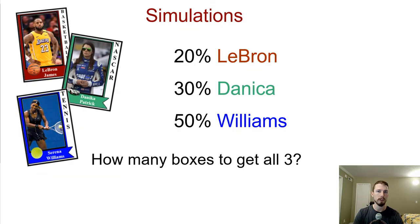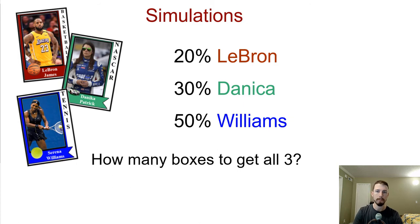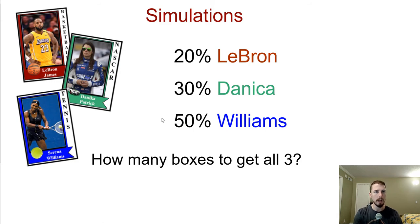A cereal manufacturer wants to boost the sales of their cereal boxes, so they decide to randomly place playing cards into each box. LeBron James' card was placed into 20% of the boxes, Danica Patrick was put in 30% of them, and Serena Williams was put into 50% of them. The question we might ask is: how many boxes would it take to collect all three?